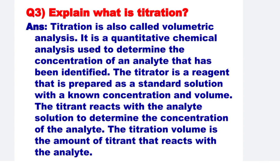Next: Explain what is titration? Titration is also called volumetric analysis. It is a quantitative chemical analysis used to determine the concentration of an analyte that has been identified. The titrant is prepared as a standard solution with a known concentration and volume, and it reacts with the analyte solution to determine the concentration of the analyte.